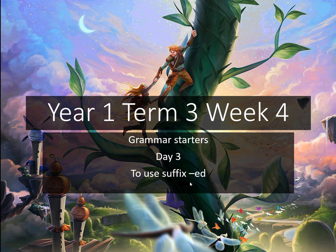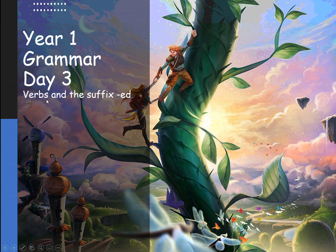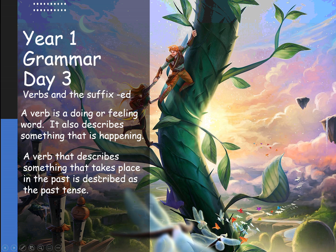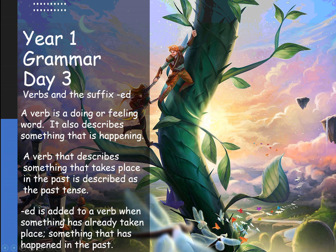This week we've been looking at the suffix ED. Today I want you to think about what verbs are and how the suffix ED affects them. So quickly tell your grown-up, and when you're ready start the video again. Verbs are a doing or feeling word — they also describe something that's happening. A verb that describes something that takes place in the past is in the past tense, and ED is added to a verb when something has already taken place, something that's happened in the past. That's how ED words are used when it comes to verb tenses.